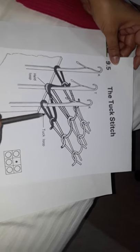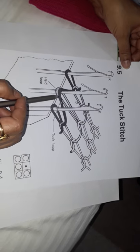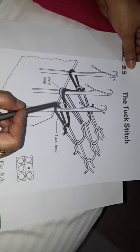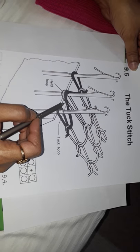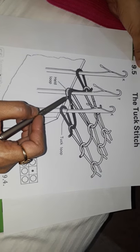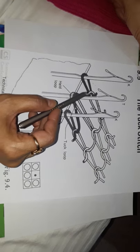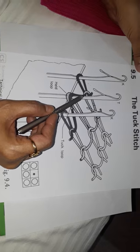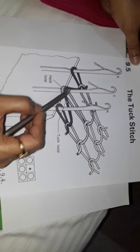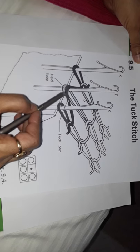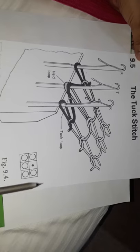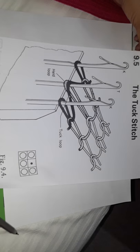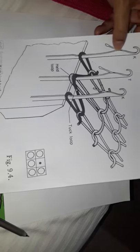When you have a tuck stitch, the needle actually goes halfway up and just receives a new yarn, so it forms floats like this. Let's see how to draw a tuck stitch.